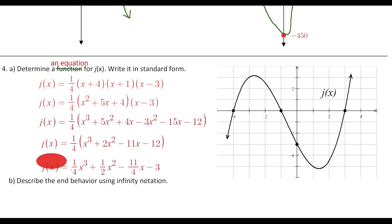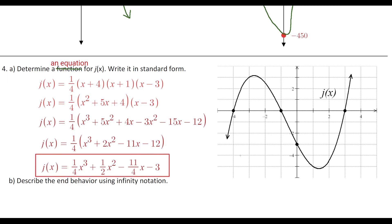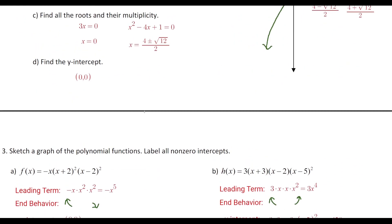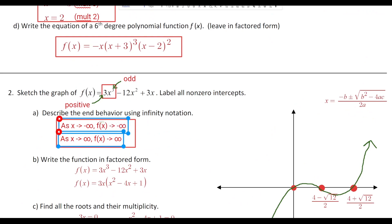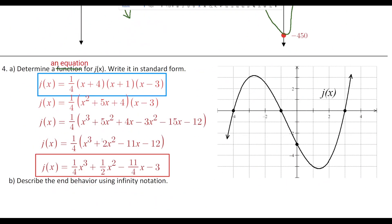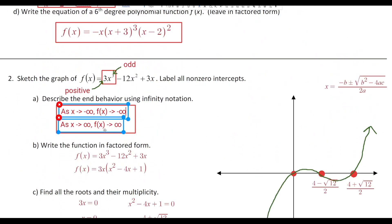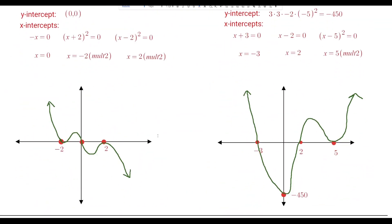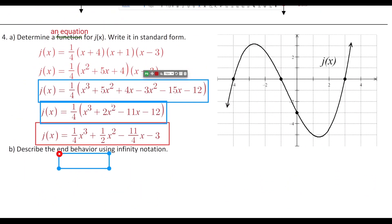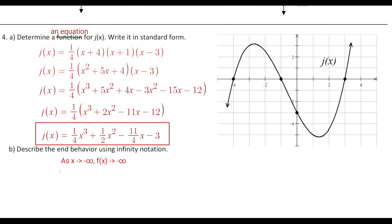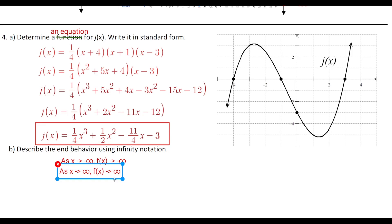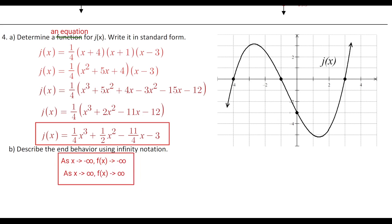There's our function. For the end behavior using infinity notation: we can see from the graph it goes down to the left and up to the right. So as x → −∞, f(x) → −∞, and as x → +∞, f(x) → +∞. That concludes number four.